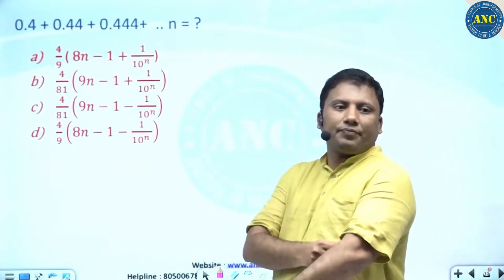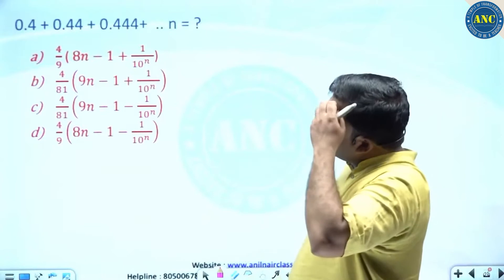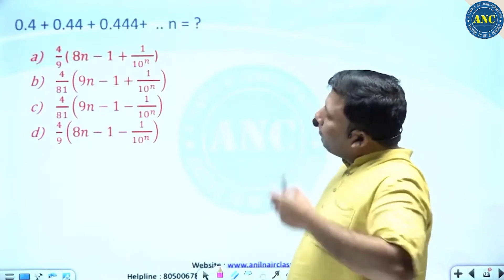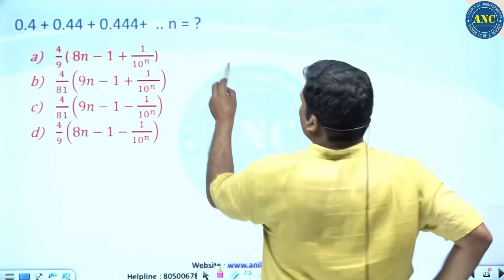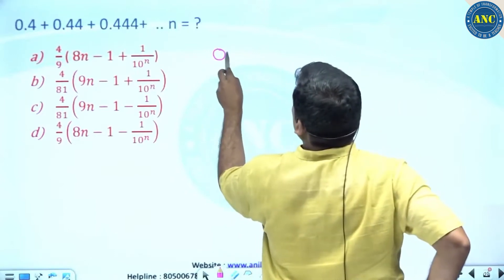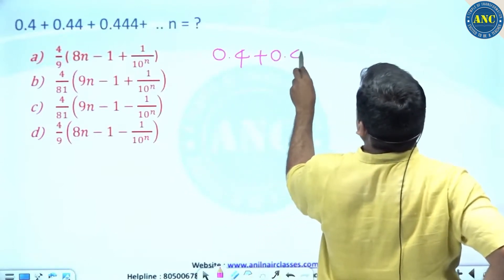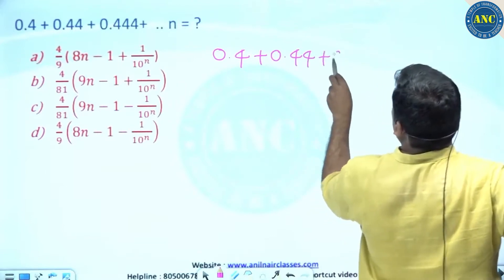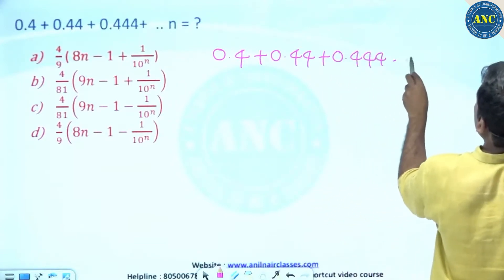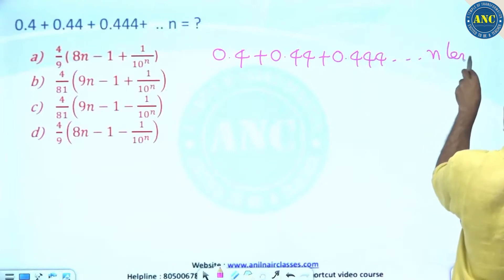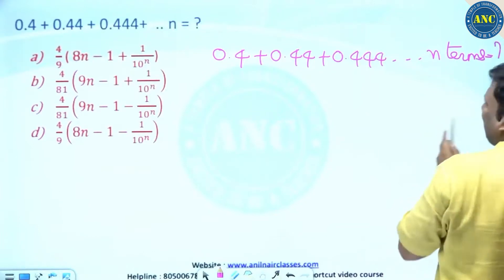Now see here: 0.4 plus 0.44 plus 0.444, and so on up to n terms. This is a very good question.